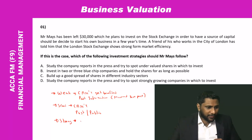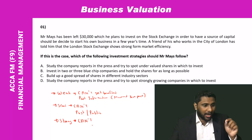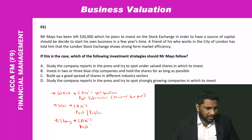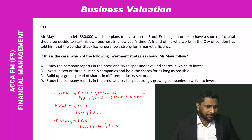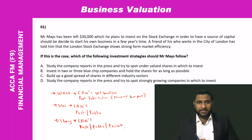In strong form efficiency, you can't get benefited by having past information, publicly available information, or private information. That level of efficiency is called strong form efficiency.